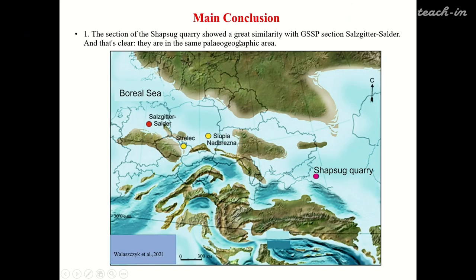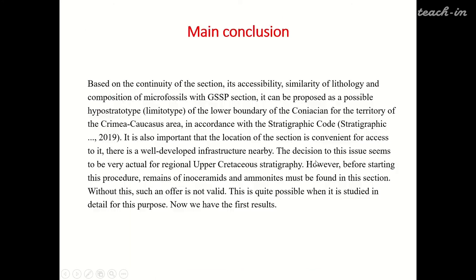The section of Shapsuk quarry shows great similarity with the GSSP section, indicating they are in the same paleogeographic area. Based on the continuity of the section, its accessibility, similarity of lithology, and composition of microfossils with the GSSP section, it can be proposed as a possible hypostratotype for the lower boundary of the Coniacian for the territory of the Crimea-Caucasus area. It is also important that the location of the section is convenient for access, with well-developed infrastructure nearby.